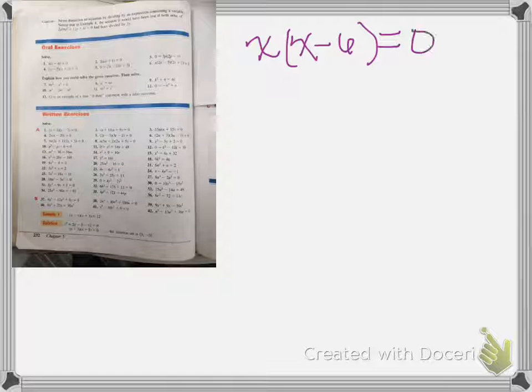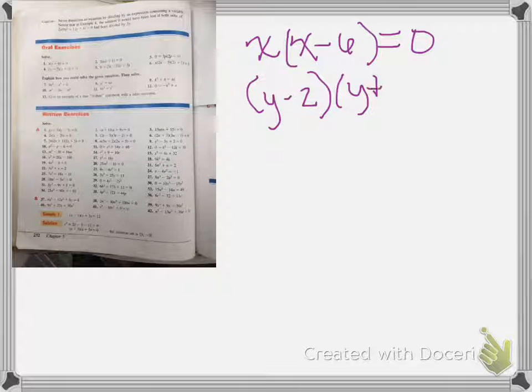or if it's set up as number 4, y minus 2 times y plus 5 equals 0.